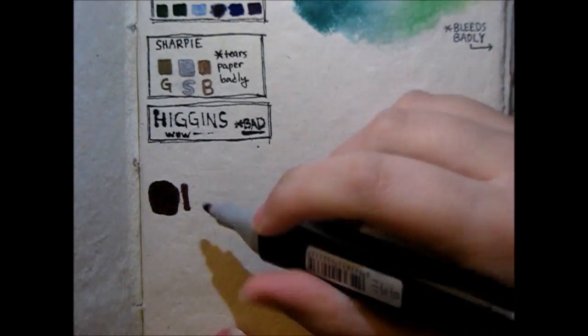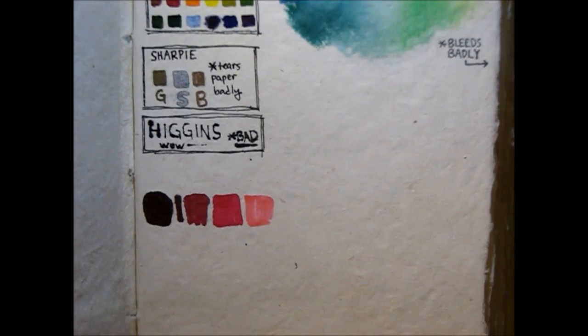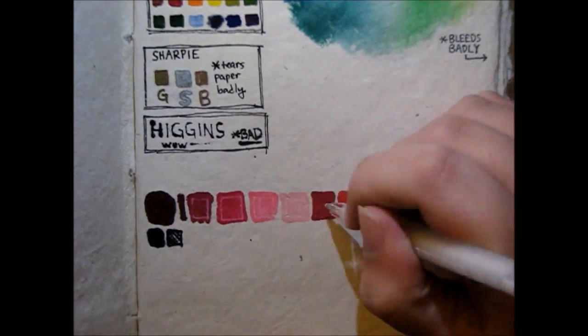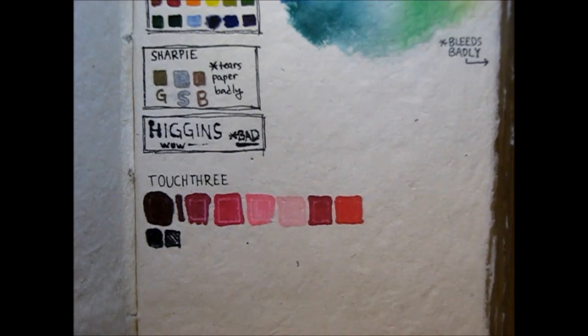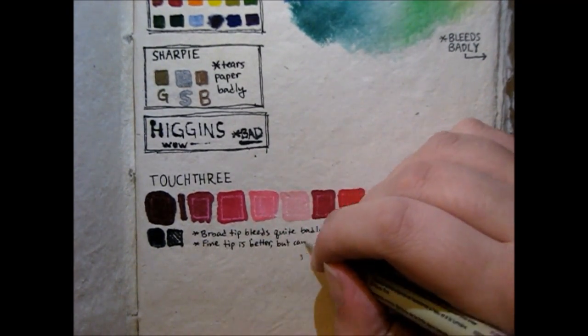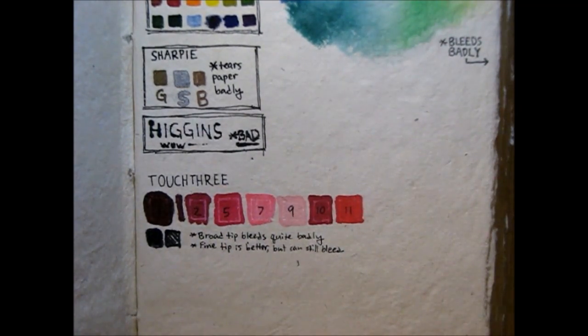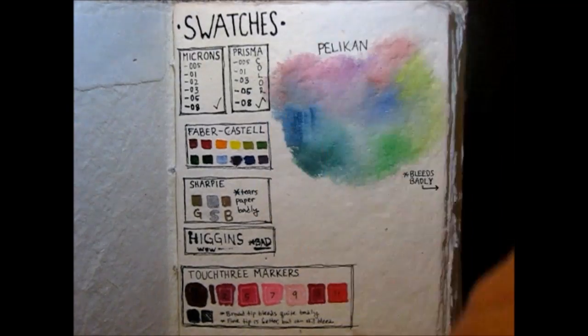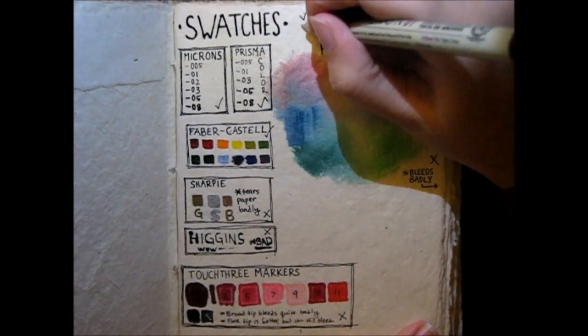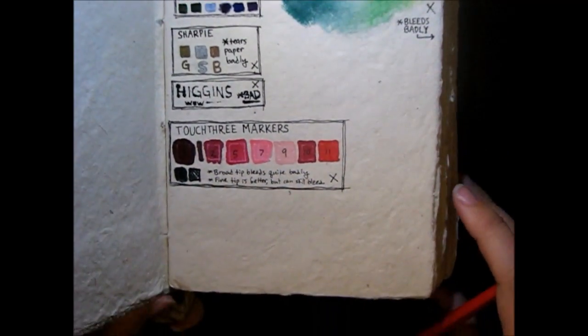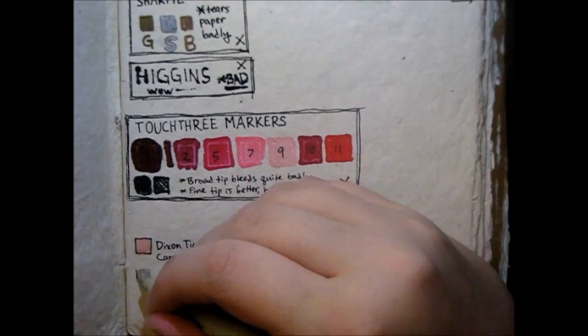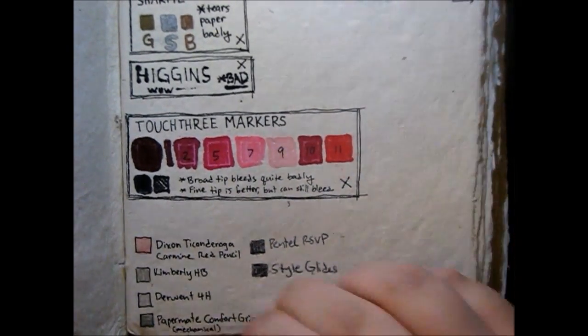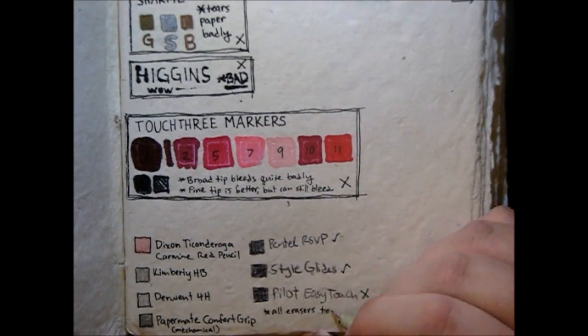The same thing kind of happened with my alcohol markers, my Touch Three markers. I was hoping those would go a little bit better, but they went straight through too. I could deal with it or whatever, but it's not a watercolor sketchbook, and I would end up wasting a lot of my paints and ink from my markers just because of how badly it soaks through. Some watercolor paper is like that too. I tried to use my alcohol markers on some watercolor paper once, and after a while I kind of realized it's just absorbing all my ink. That's why I usually use my Moleskine.